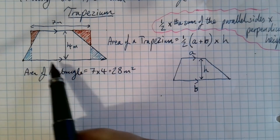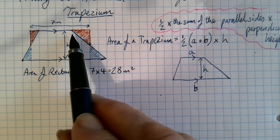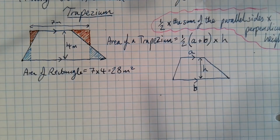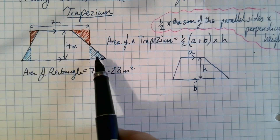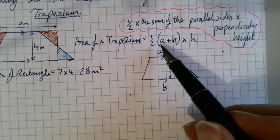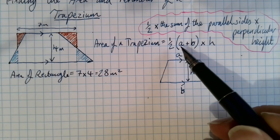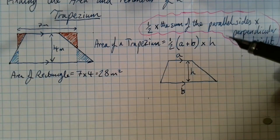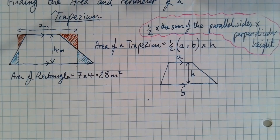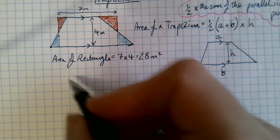Why is it half of the two sides added together? This length here is longer than the length of the rectangle; this length here is shorter. If you add the two sides together and then halve what you've got, you get the length that's halfway between the shorter and longer side — which is the length of the rectangle you want. A half of those two sides added together gives you the length in the middle, and then you multiply by the perpendicular height, which is like the width of the rectangle.